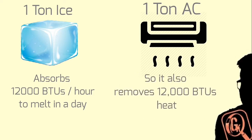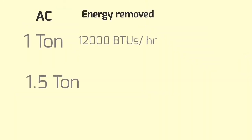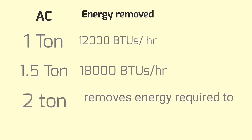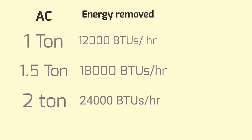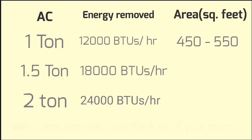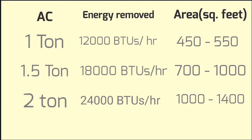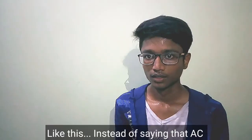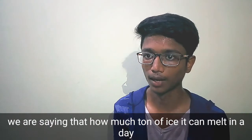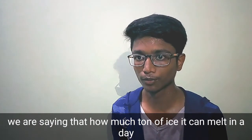1 ton AC absorbs 12,000 BTUs per hour. 1.5 ton AC is 18,000 BTUs per hour. 2 ton AC is 24,000 BTUs per hour. For room area: 1.5 ton AC is suitable for 700–1000 sq ft, and 2 ton AC is for larger areas.